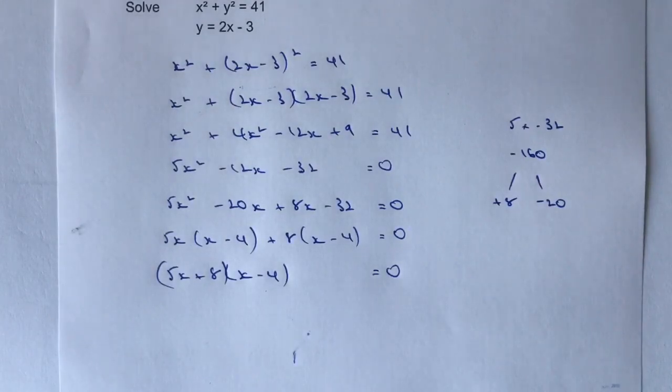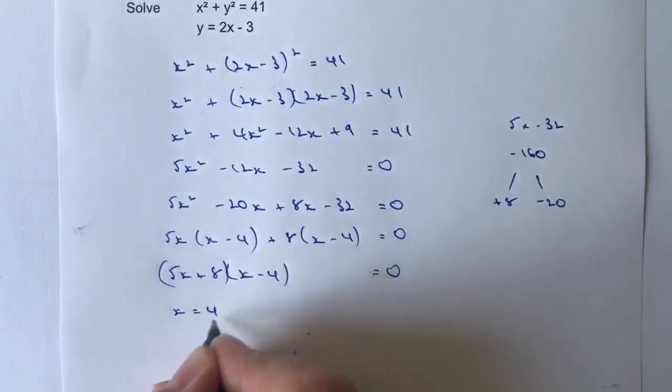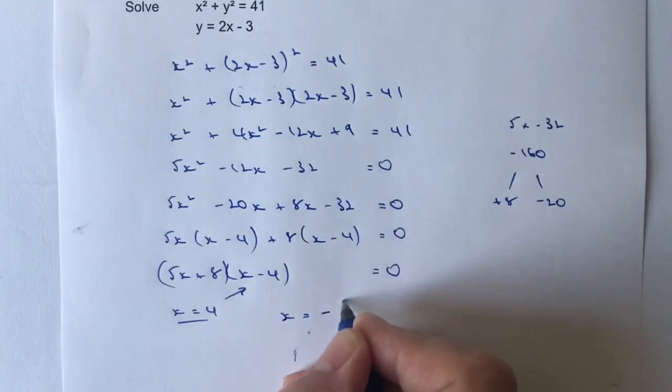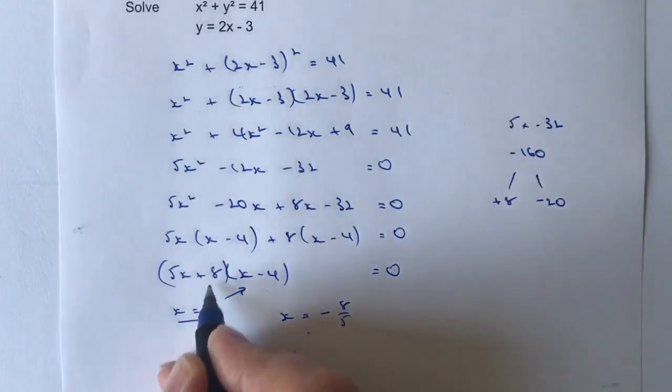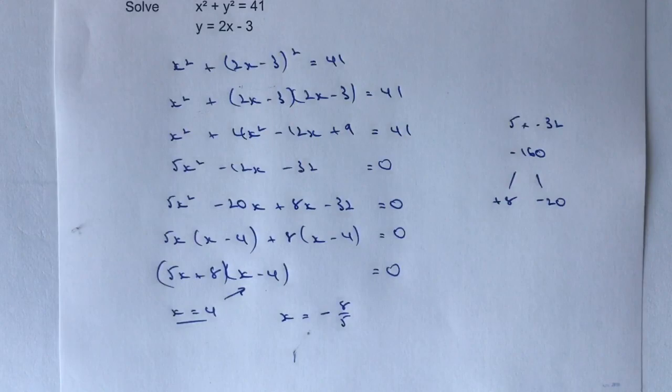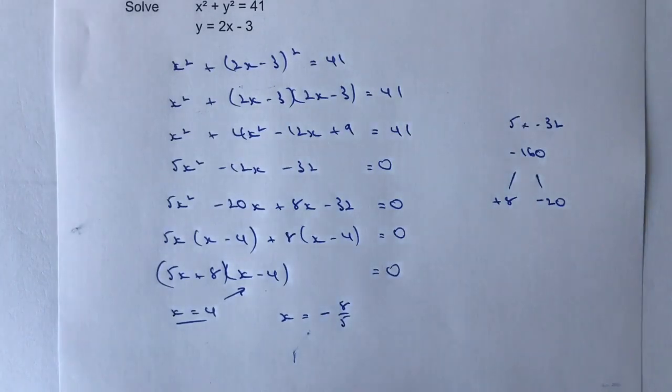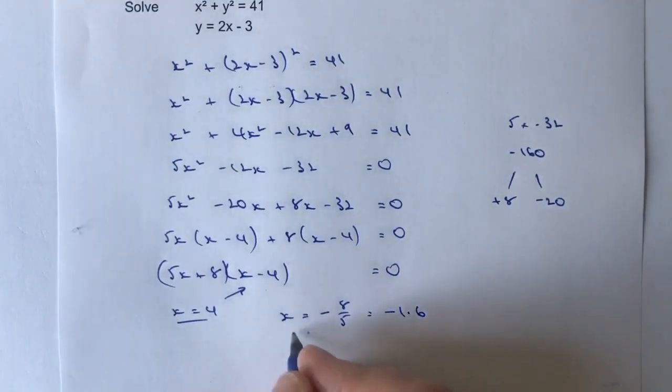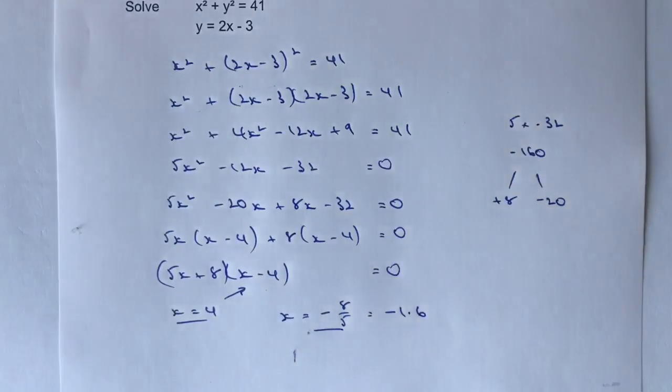Now, it then means I can use this information to figure out my values of x, which are going to be x equals 4, which comes from this one here, and x equals minus 8 over 5, which comes from this one over here. Now, just because it's going to be a little bit simpler for me, I'm going to write that minus 8 over 5 as minus 1.6. It's just the decimal equivalent.